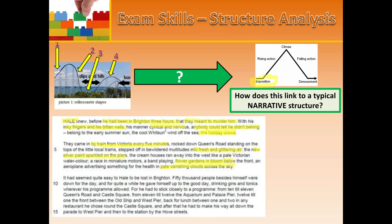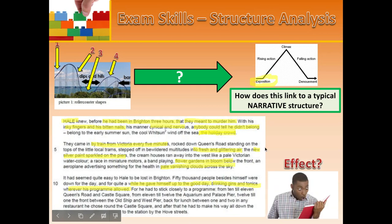In the final paragraph of the exposition, Hale is giving himself up to the good day, drinking gin and tonics whenever his program allowed. 'Program' implies he's there for a particular reason — a job. The fact he 'gave himself up to the good day' implies he's becoming distracted from the idea that people want to murder him, or beginning to relax and feel safe. What is the effect of building character and setting using contrast in this way?